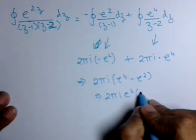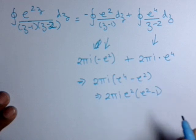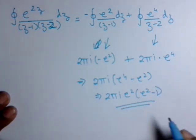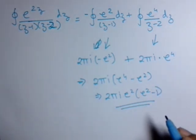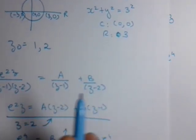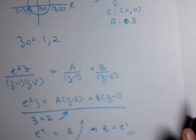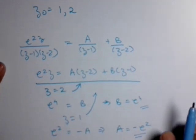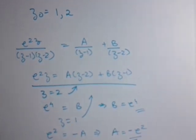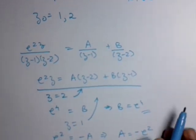So the important part here was just to bifurcate the question into two parts involving two constants and finding the value of the constants. This was an example based on the first form of Cauchy Integral Formula.